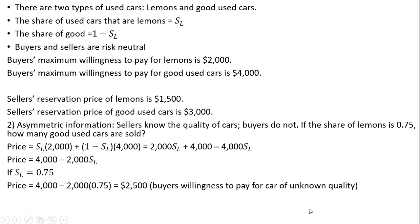Plugging 0.75 into the equation: If 75% of the cars are lemons on the market and buyers cannot tell which car is a lemon, buyers are willing to pay at most $2,500.